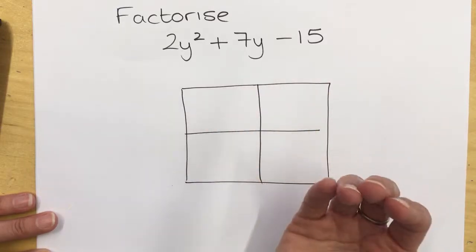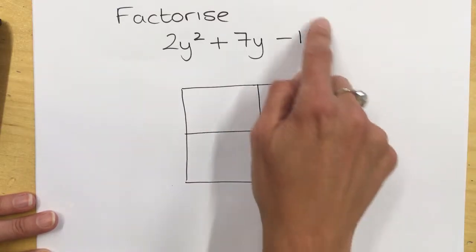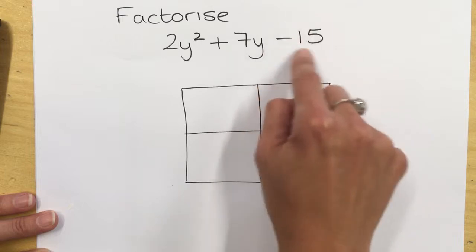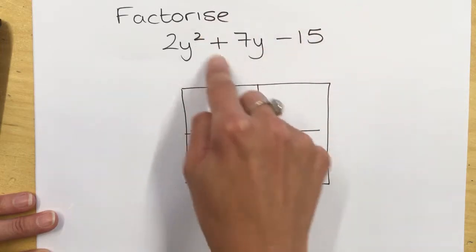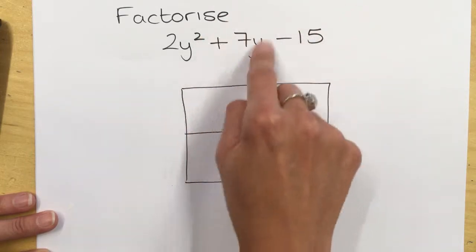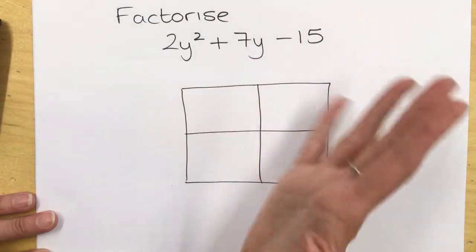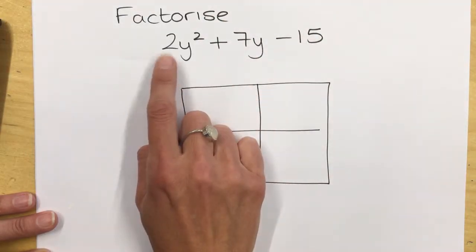You can't just follow the rule of the easy method where you multiply two numbers together to give you the constant and add the two numbers to give you the value in front of the y. That doesn't work when you have a coefficient here in front of the y squared.